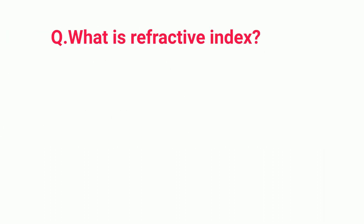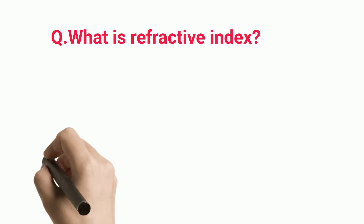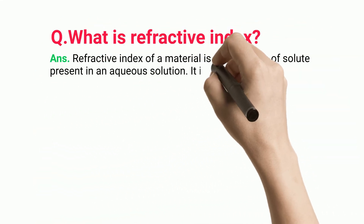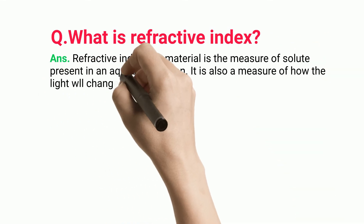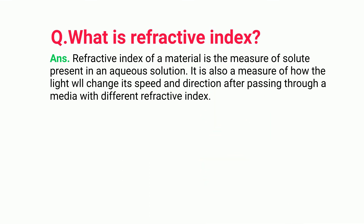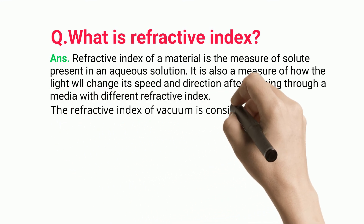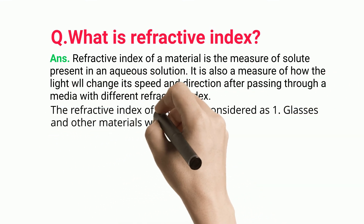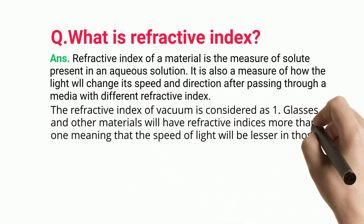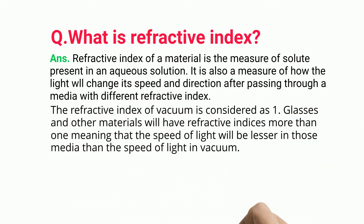What is refractive index? The refractive index of a material is a measure of how the light will change its speed and direction after passing through a medium with a different refractive index. The refractive index of vacuum is considered as one. Glasses and other materials will have refractive indices more than one, meaning the speed of light will be lesser in those media than in vacuum.